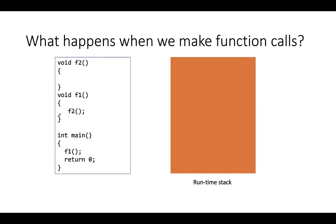So let's take a look at this example. Here I have the main function, and the main function makes a function call to F1, and F1 makes a call to a third function, F2. Now to support these function calls, we have the runtime stack. The runtime stack is this region of memory where local variables and parameters are allocated.